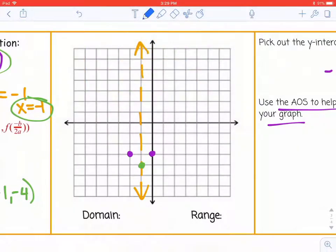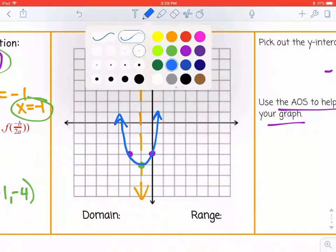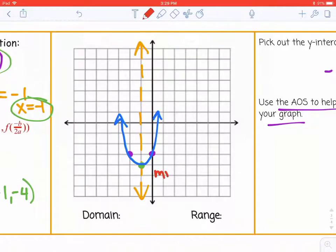Then I can sketch my parabola. It's going upwards. I have a minimum vertex because it's the lowest point on my graph.